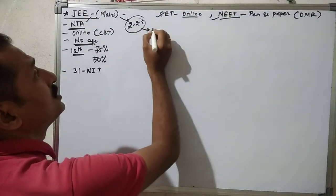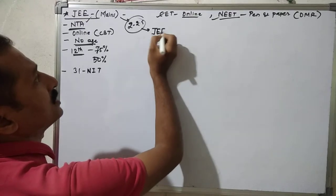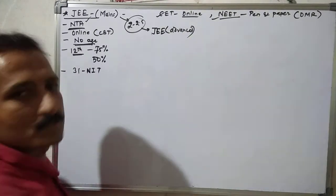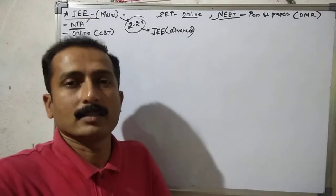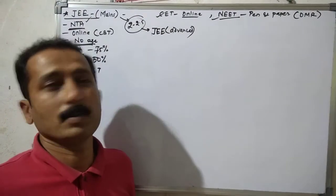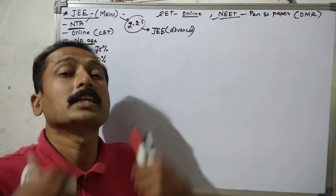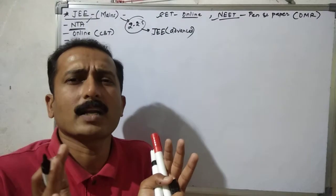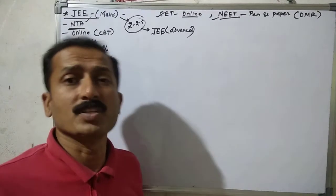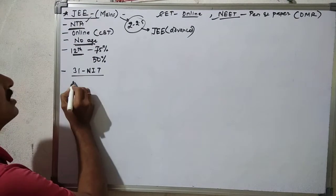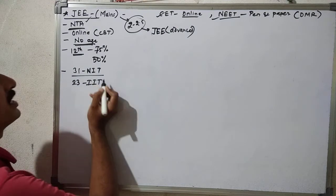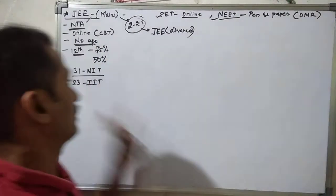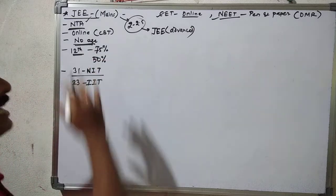JEE Main and JEE Advanced are two different types of exams. After cracking JEE Main, you then have to appear for JEE Advanced. The top 2 lakh students by percentile score get the chance to appear for JEE Advanced, which gives admission to around 23 IITs in India for Bachelor of Engineering, Bachelor of Architecture, and Bachelor of Planning.